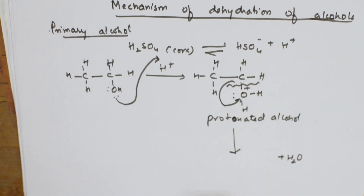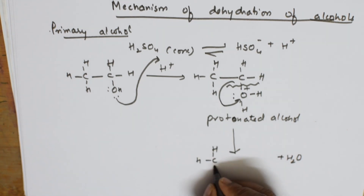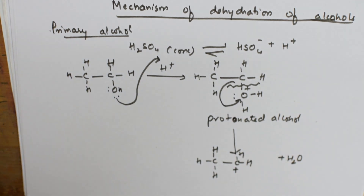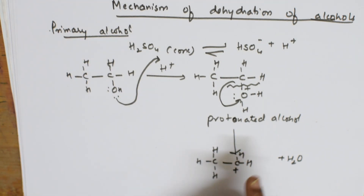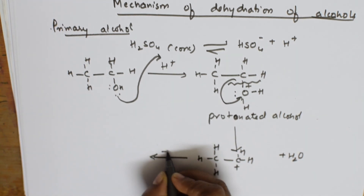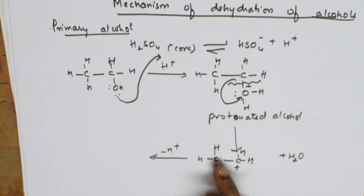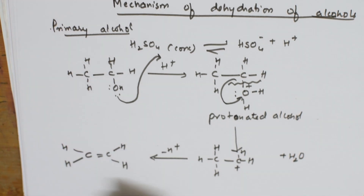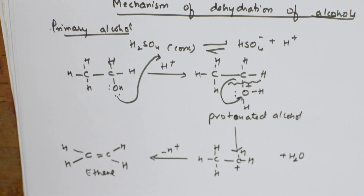From this protonated alcohol, water is eliminated to form a carbocation — specifically the ethyl carbocation (CH₃–CH₂⁺). Then a new molecule of alcohol is taken; the H⁺ is lost from this molecule, the bond shifts again, and we get a carbon–carbon double bond: CH₂=CH₂, which is ethene.